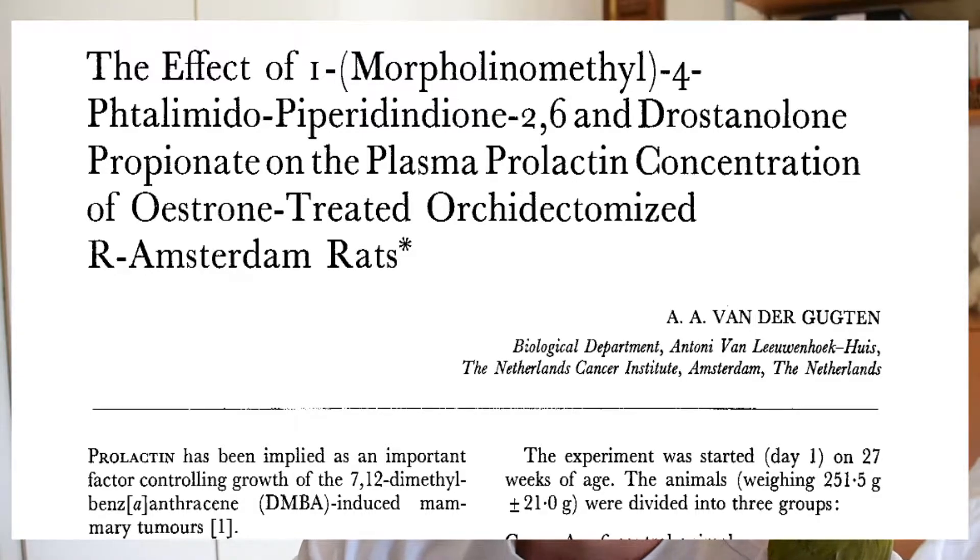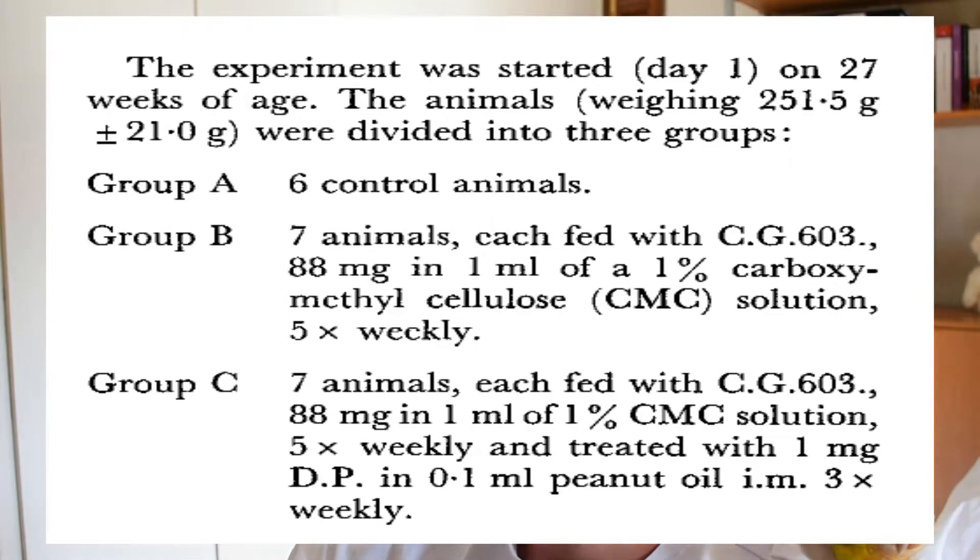In one study that looked at drostanolone propionate in reducing plasma prolactin levels within rats, these rats were orchidectomized — meaning their ovaries were removed — and were given estrogen to stimulate prolactin levels. Two other groups were given masteron with cyclic iamide, and cyclic iamide by itself, which does inhibit prolactin. If you calculate the dose and extrapolate it to humans, it comes out to about 200 milligrams of masteron propionate weekly.